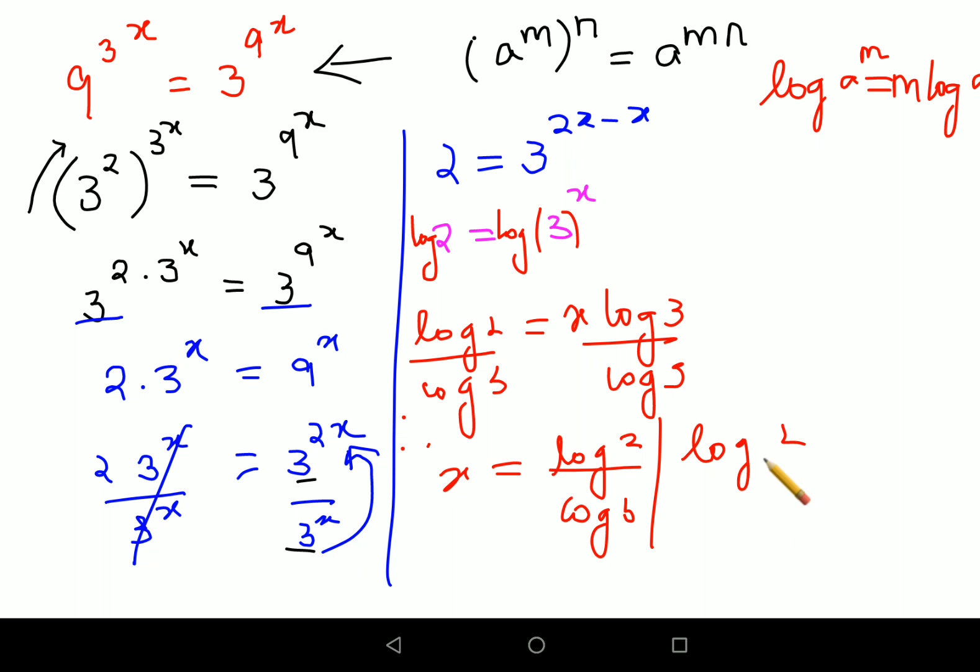Or I can say it is log of 2 to the base 3, or if they've given you the log book, then we can put the values. Now why did this happen? There is a rule in logarithm which says that log of a upon log of b is equal to log of a to the base b.